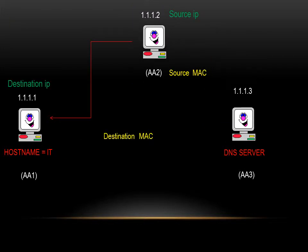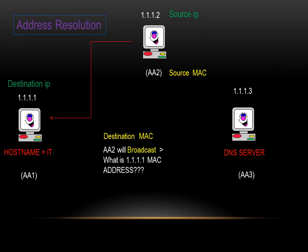Now, at the fifth step, AA2 will broadcast asking for the MAC address of IP 1111.